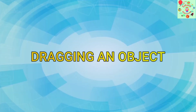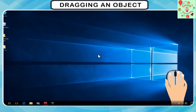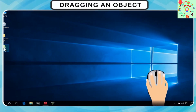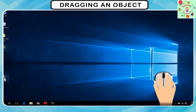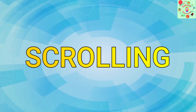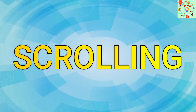The fourth function is dragging. To drag the mouse, first press the left button with your index finger, and keeping the finger pressed on the left button, move the mouse. Once you reach the place where you want to keep it, lift the finger. This is called drag and drop.